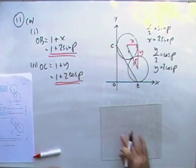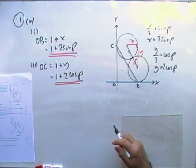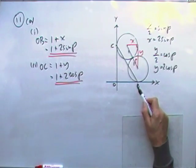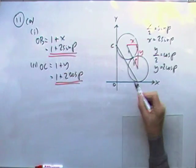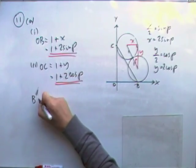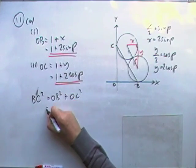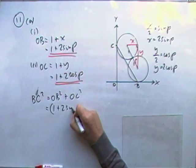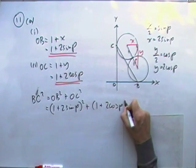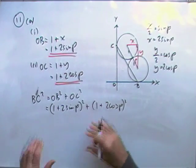And then it says, hence show that D, where D I presume is the distance, the length of BC. Show that D, the length of BC, is equal to this expression. Right. Well, BC is just going to be that right-angled triangle. So we've got BC squared would be OB squared plus OC squared. So that would be 1 plus 2 sin P squared plus 1 plus 2 cos P squared. And then I'll just rattle through that.